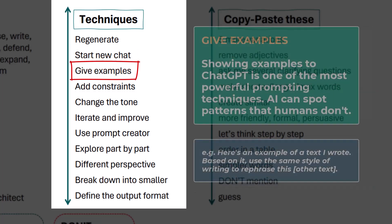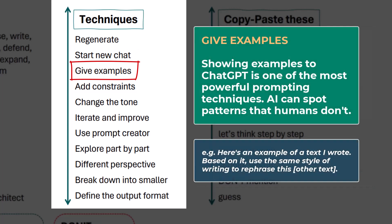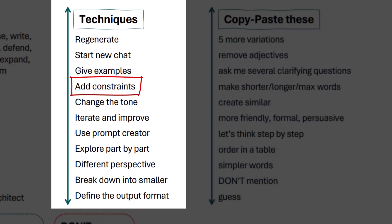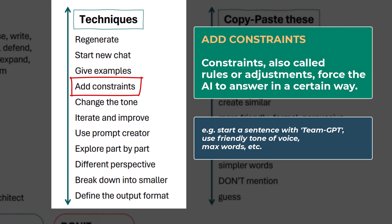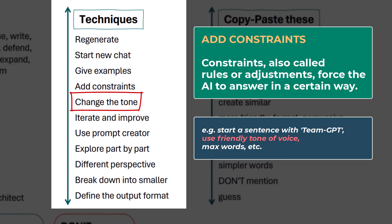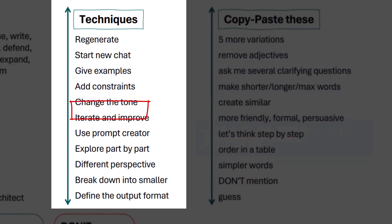Three: provide examples. This is very important and we will have a separate lecture on it. Four: add constraints whenever needed — for instance, start a sentence with the word TeamGPT. Five: asking the AI to change the tone from professional to friendly or vice versa is also often needed.